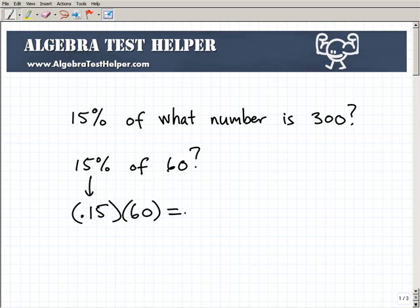And then we multiply it by the number we're trying to find a percent of. So 0.15 times 60. When we do that in our calculator, we'll get our answer. So that's how you find a percent of a number.